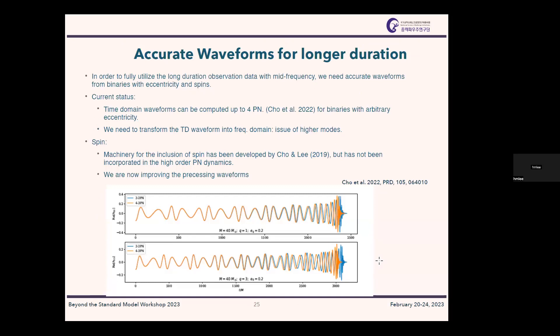There are some challenges: we have to observe for 60 days to months, during which the binary emits many cycles of gravitational waves. We need very accurate waveform models for this — which is not easy, but we are working on it.